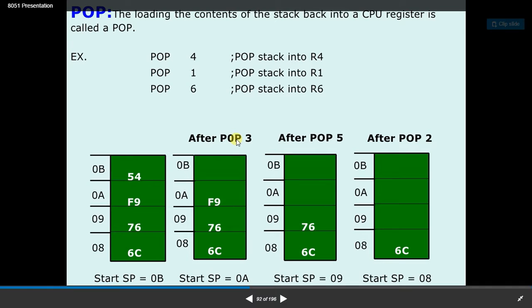So now after POP 3, what it will do is it will copy the data 54 and store it in this register.